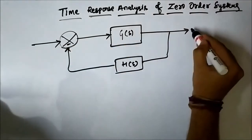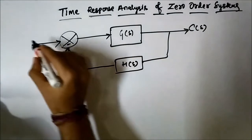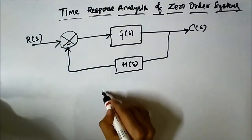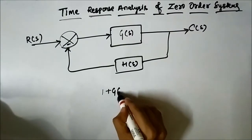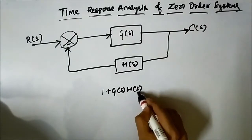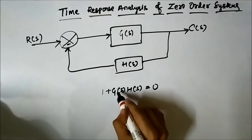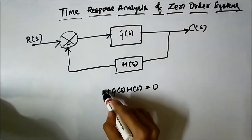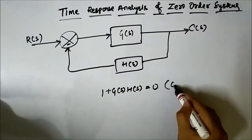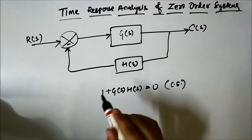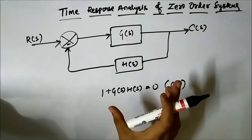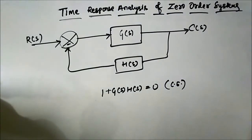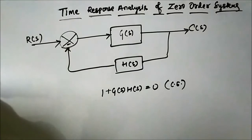The characteristic equation is 1 plus G(s)H(s) = 0, where G(s) is the forward path gain and H(s) is the feedback path gain, both in the s domain. The highest power of s in this characteristic equation gives us the order of the closed loop system.